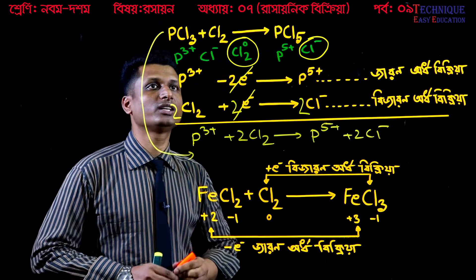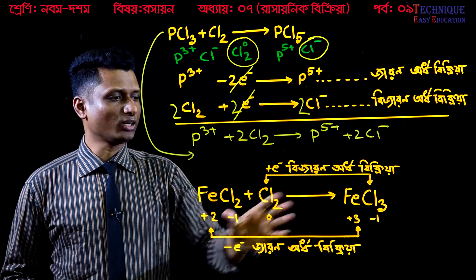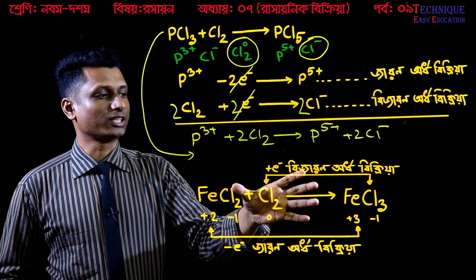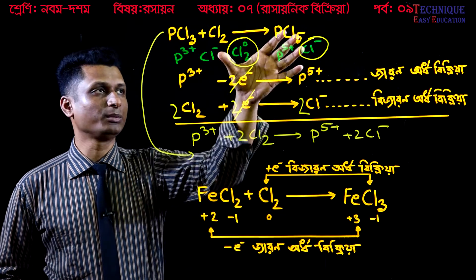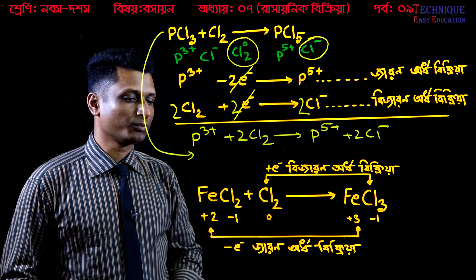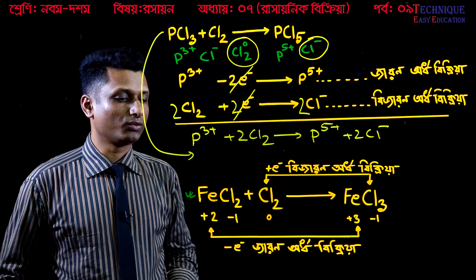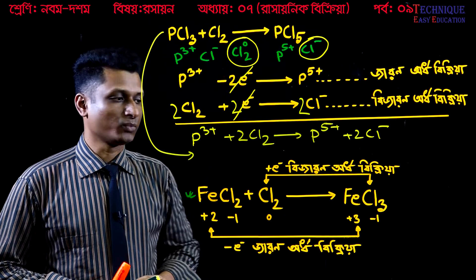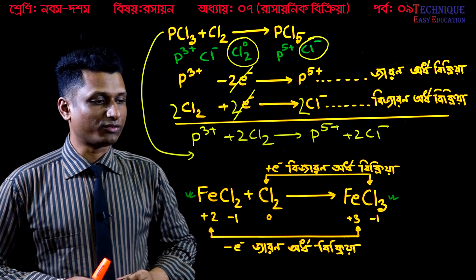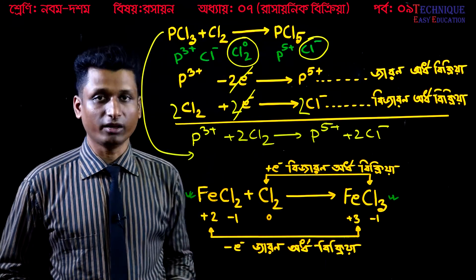This is phosphorus trichloride reacting with chlorine. Now, FeCl2 is called ferrous chloride, and FeCl3 is called ferric chloride. Ferrous chloride and ferric chloride differ in the oxidation state of the iron and the number of chlorine atoms.